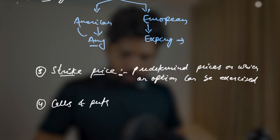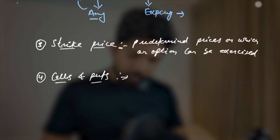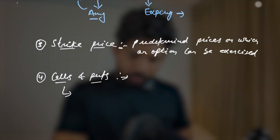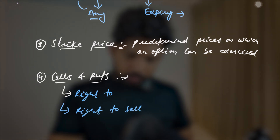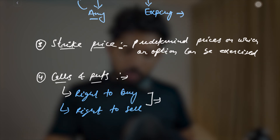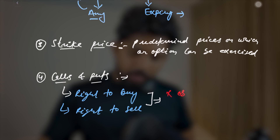Next we have calls and puts. A call option means the right to buy an underlying asset at the strike price — simply, the right to buy. A put option is the right to sell. Importantly, these are rights, not obligations. It is completely up to you whether you want to exercise the option or not. These are rights for the option buyer, but for the option seller they become an obligation.